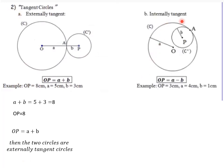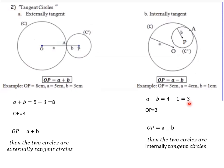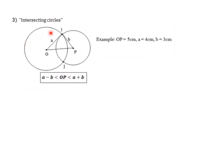For internally tangent circles: if the distance between the two centers equals A minus B, then the circles are internally tangent. In this case, A minus B equals the value of OP, which is 3 — they are equal — so the two circles are internally tangent.